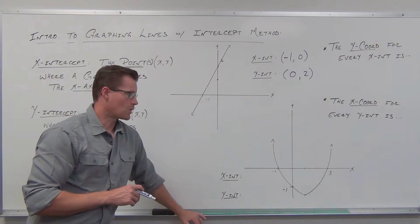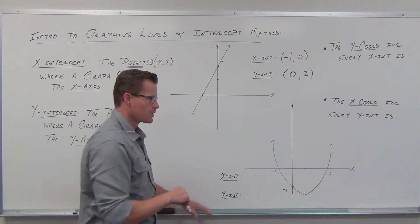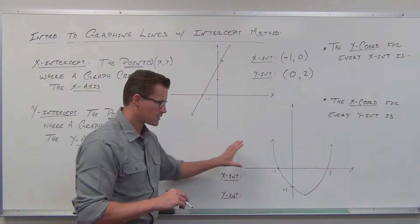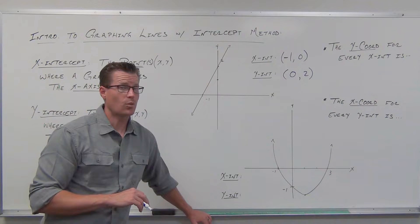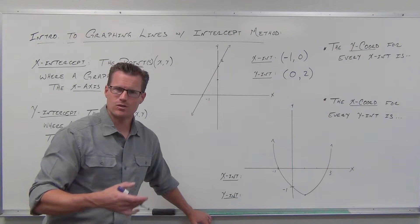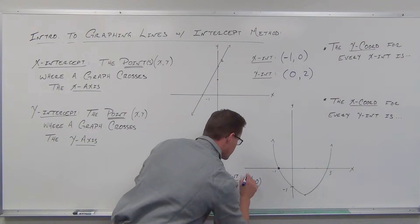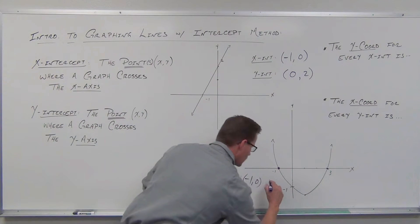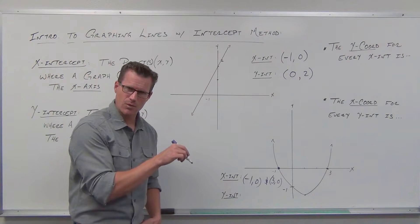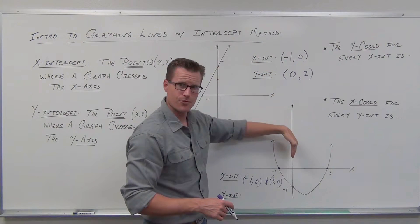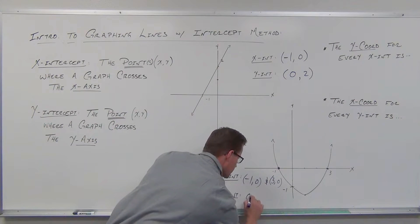Go ahead and find the other ones if you want. We can have more than one x-intercept — this graph, a parabola, has two of them. Find both. Where this parabola intersects the x-axis: functions can have more than one x-intercept, but they can't have more than one y-intercept — that would be a non-function. Our x-intercepts are negative one, zero and three, zero. The y-intercept — there's only one — is zero, negative one. X-coordinates come first, y-coordinates come second.